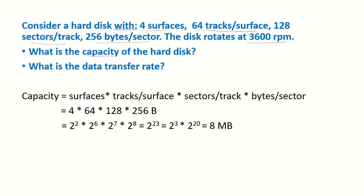What is the capacity of the hard disk and what is the data transfer rate? So our hard disk is consisting of 4 surfaces and each surface is having 64 tracks and there are 128 sectors on each track and 256 bytes in each sector.